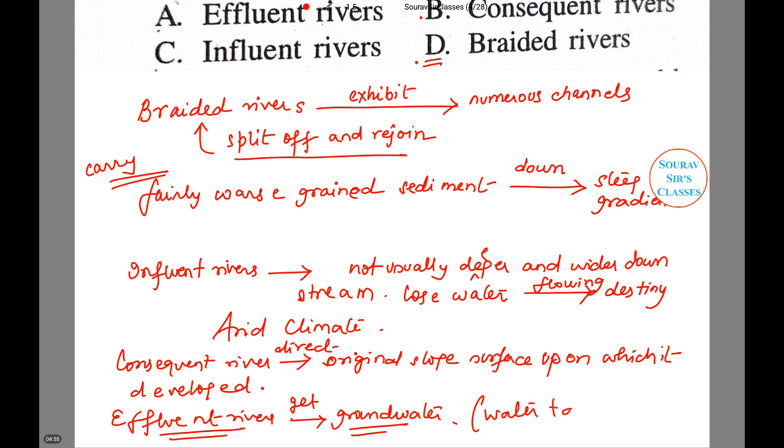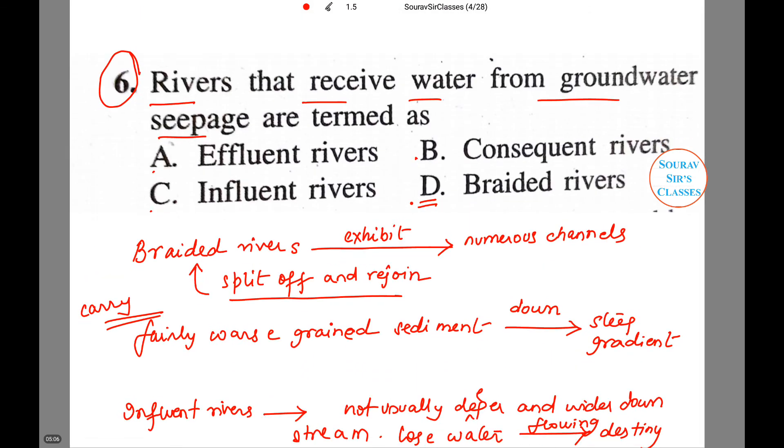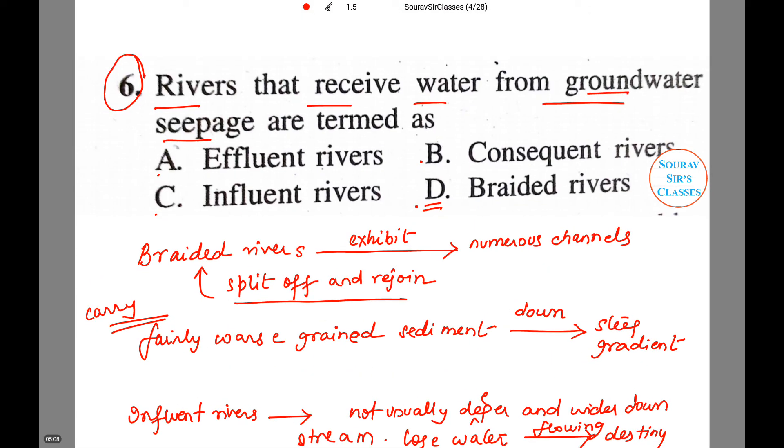And if the stream, these rivers will rise or fall—that means the water table is rising or falling. Because groundwater seepage is related to effluent rivers, the best option we can pick from all these options is A. So A will be the correct answer to this particular question.